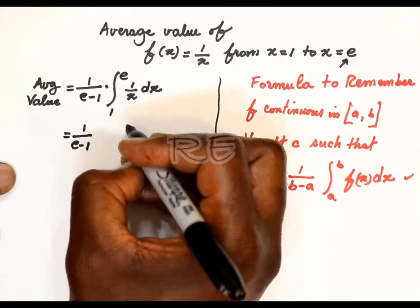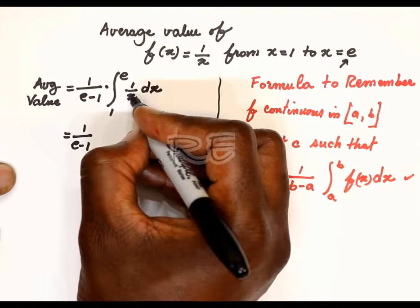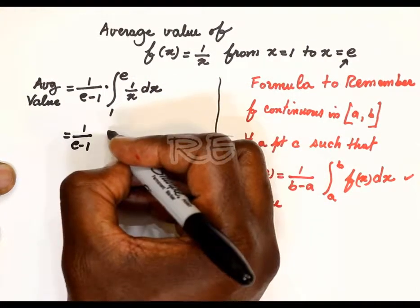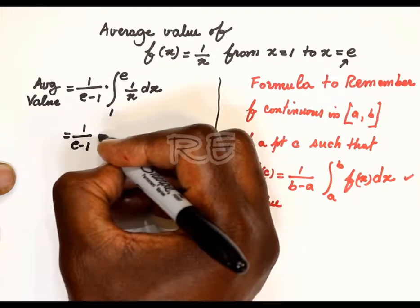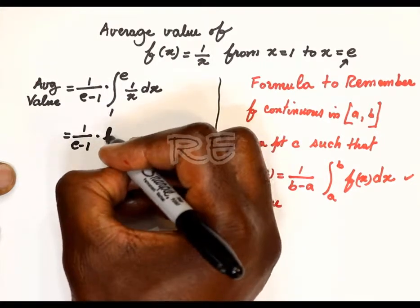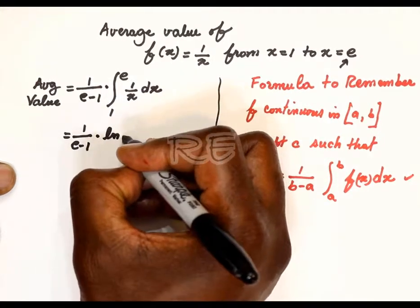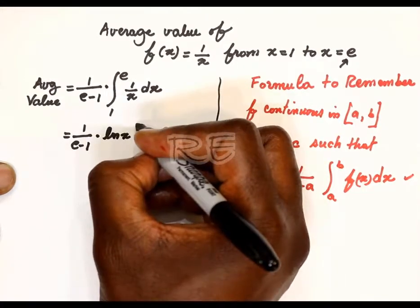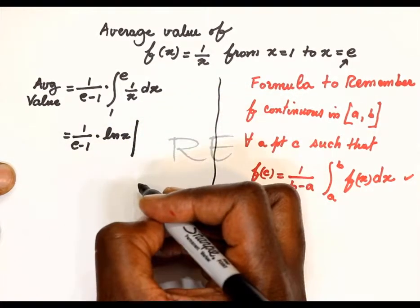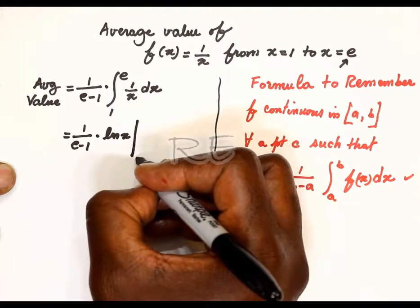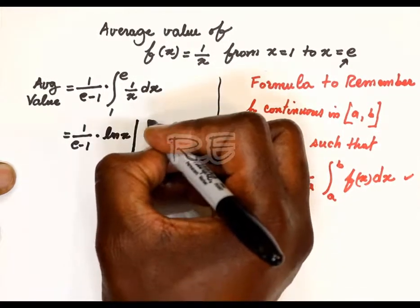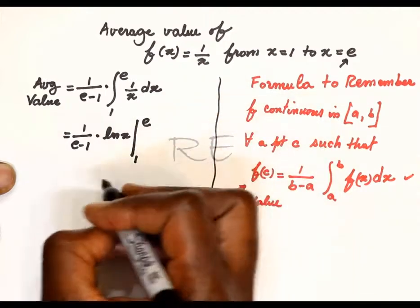1 over e minus 1. And the integral of 1 over x is just ln x. So it's multiplied by ln x. And since it is a definite integral, ln x will go from 1 to e.